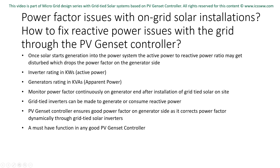Grid-connected inverters can to some extent be made to dynamically generate or consume reactive power in order to correct the power factor on the generator side. However, depending on the power factor setting of the inverter by the controller, it may affect the amount of power generation in kWh, which is mostly insignificant against the fuel saving one gets from such a microgrid. The power factor on the generator end must be strictly monitored once grid-tied solar is installed. Tuning parameters of the PV genset controller or microgrid controller must be reviewed to rectify such issues. PV genset microgrid controllers must always have a power factor correction function built into them, handling it dynamically by correcting the inverter's power factor in leading or lagging condition.